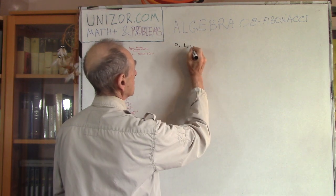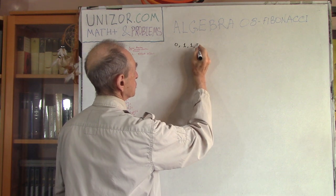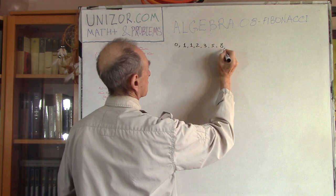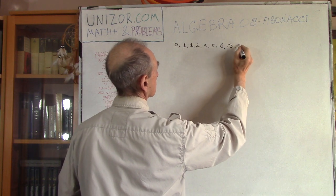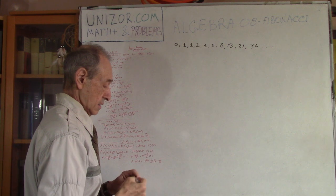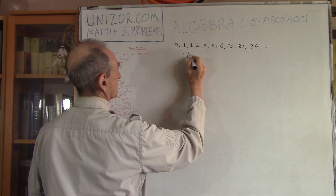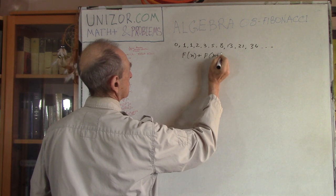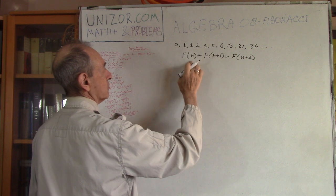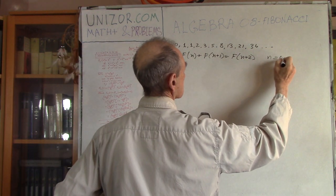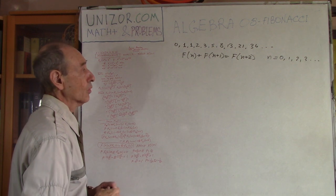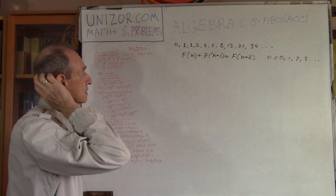So: zero and one, next one would be one. One and one, next one would be two. One and two will be three. Two and three will be five. Three and five will be eight. Five and eight, thirteen. Eight and thirteen, twenty-one, thirty-four, etc. So it grows. The principle is: F(n) + F(n+1) = F(n+2), where n starts with zero — all non-negative integer numbers.